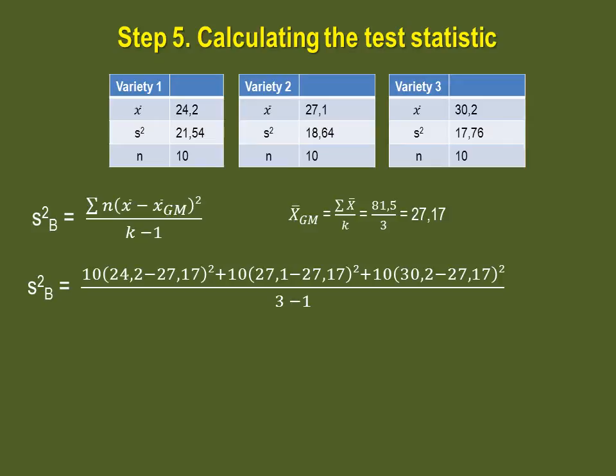And then 27.1, your mean of your second sample, minus 27.17 squared multiplied by 10. Do the same thing for variety 3. Add those up and divide it by 2.